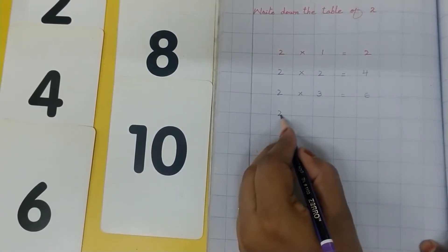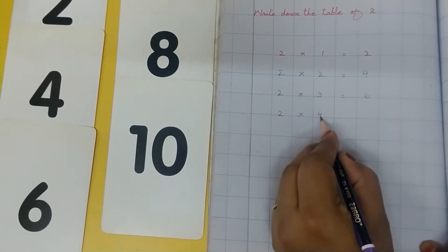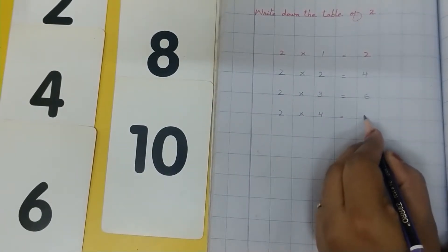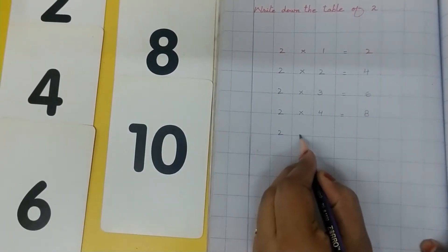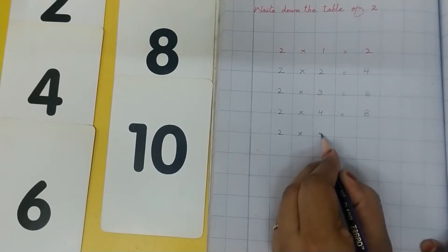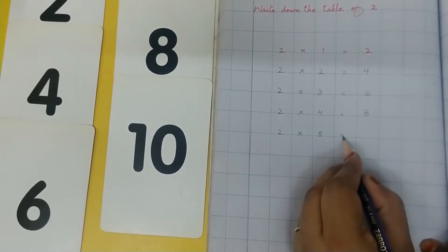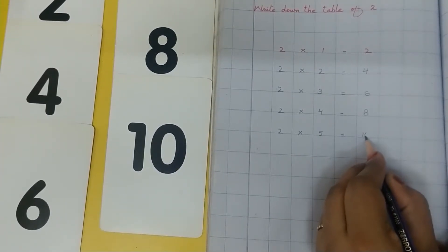2 multiplied by 4 is equal to 8. 2 multiplied by 5 is equal to 10.